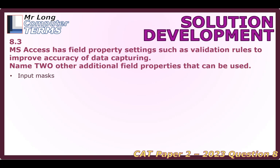First, I'm thinking about input masks. If you're looking at a registration plate for a car, you want to make sure it's first three letters, followed by three numbers, followed by two letters, with capitals. So you want to have input masks when data has to follow a particular format. Another option is field sizes — that way we can limit people to a certain amount of space. For example, an ID number can't be more than 13 characters.